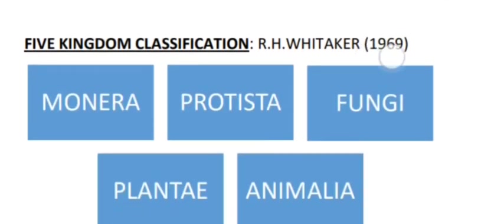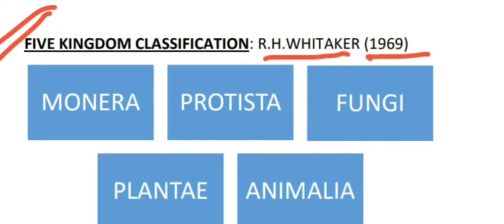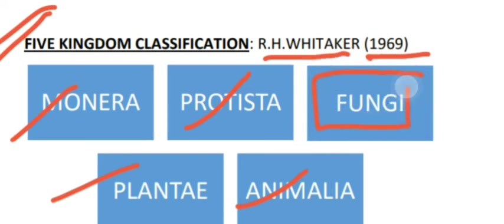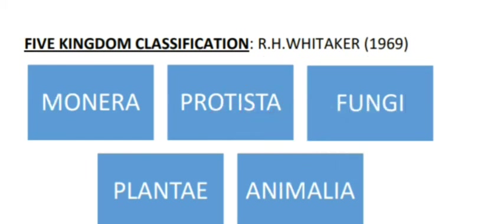In 1969, Whittaker gave the five kingdom classification, which is very important and frequently asked in exams. He took the four kingdoms — Monera, Protista, Plantae, and Animalia — and added another kingdom: Fungi. Fungi were given their own kingdom because they showed different characteristics from other organisms.